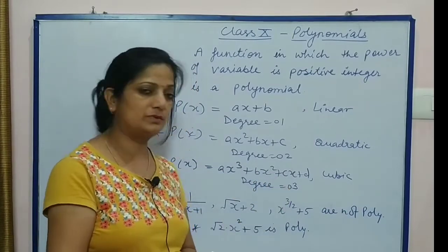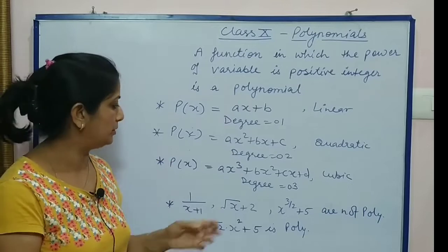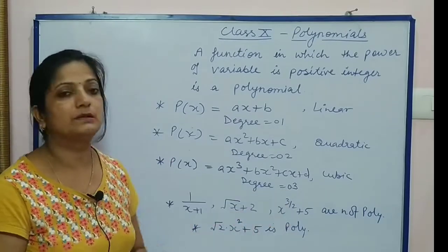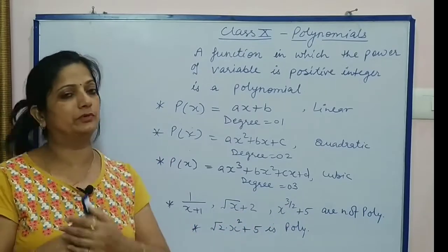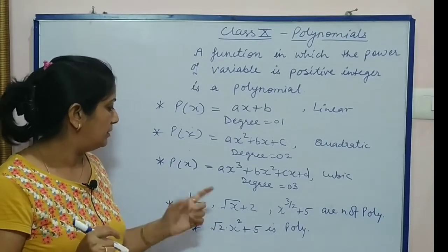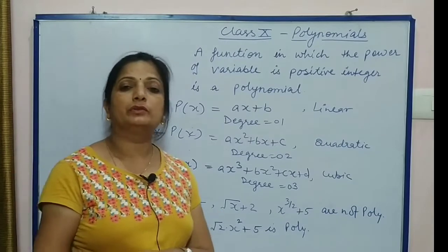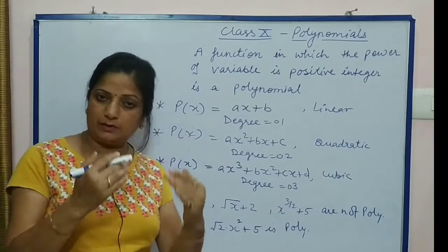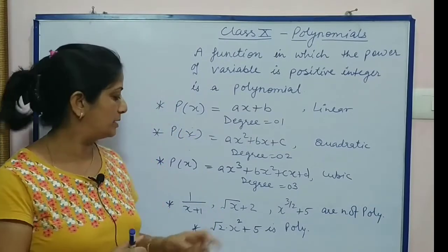Next one: ax³ + bx² + cx + d. This is a cubic polynomial because degree is 3. Degree is highest power of variable, that is x.